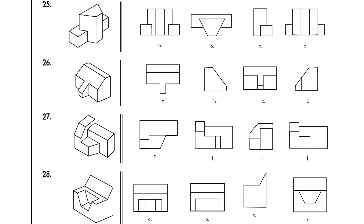Question twenty-five: option C is the incorrect view. Option B is possible — from the top you get a rectangle with a trapezium fitted on it. Option A is possible — from the front you get two small rectangular pieces with broader back lines and narrower front lines. From the side the same proportions are visible, so option A is also correct. Option C is the incorrect view.